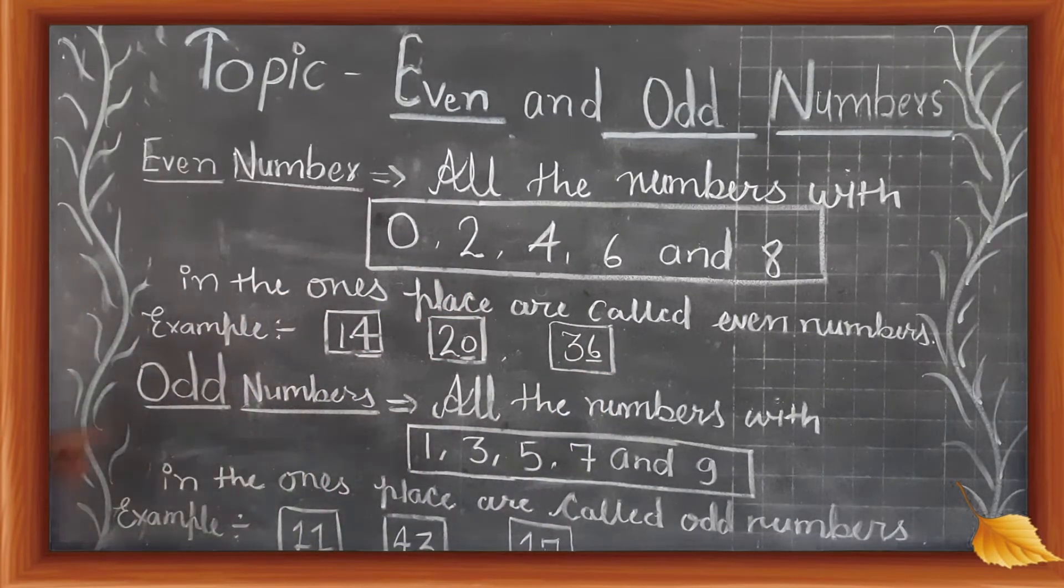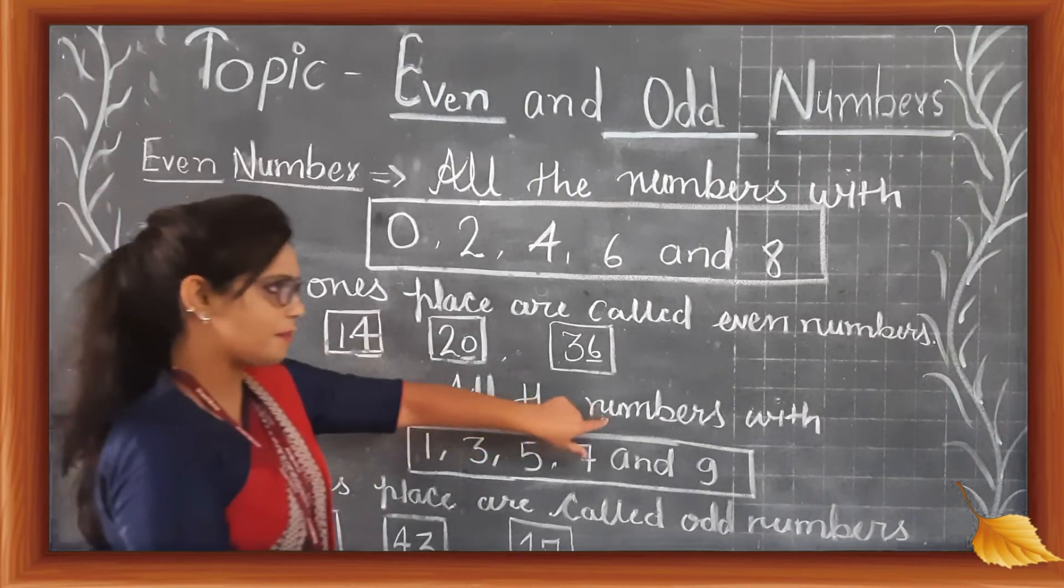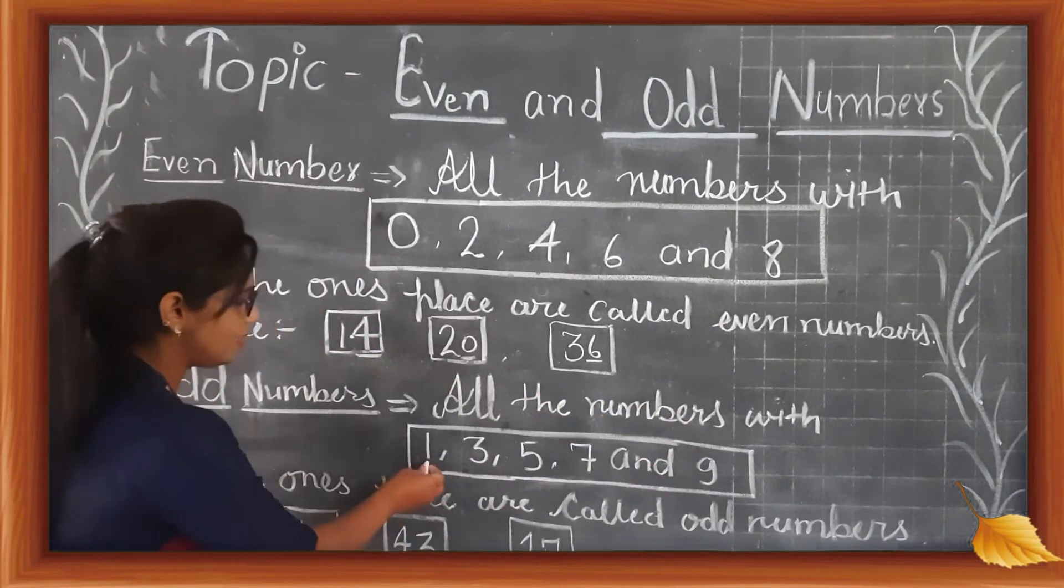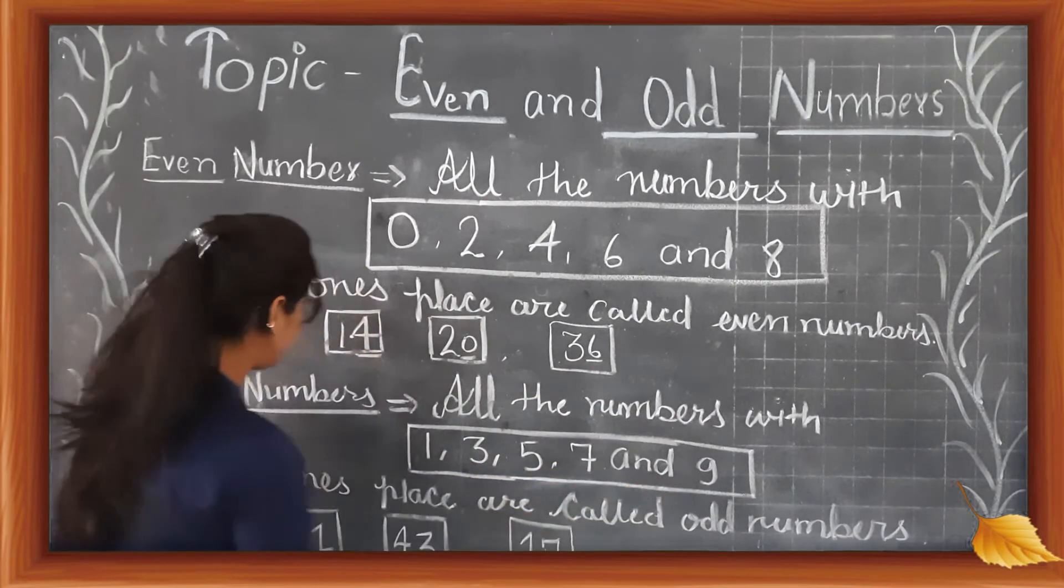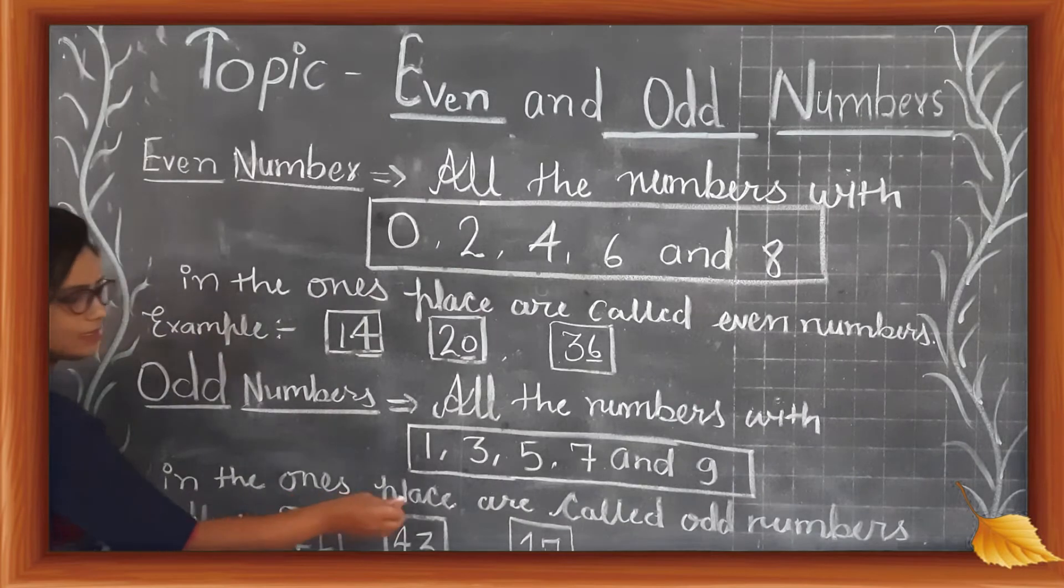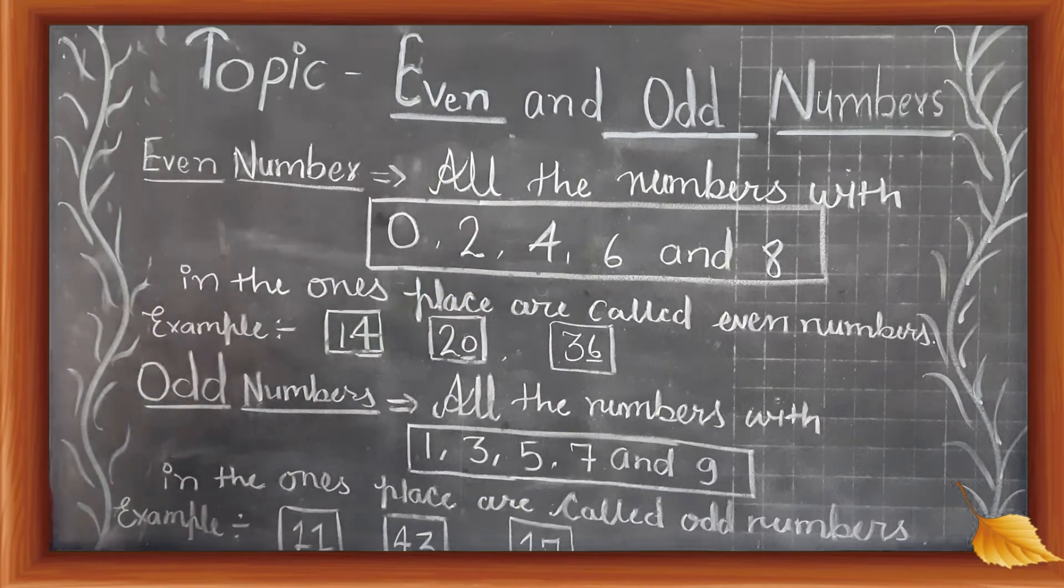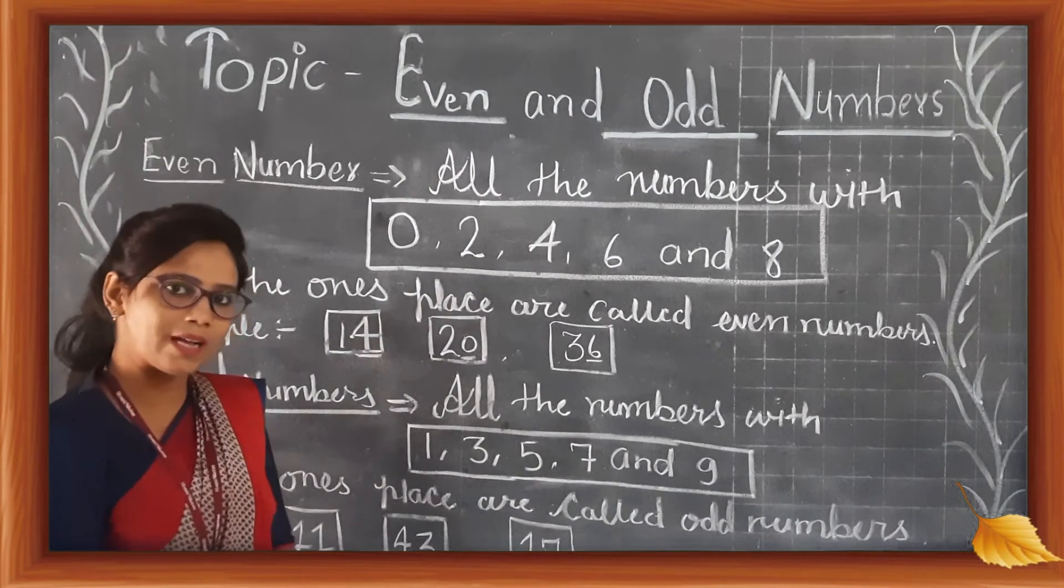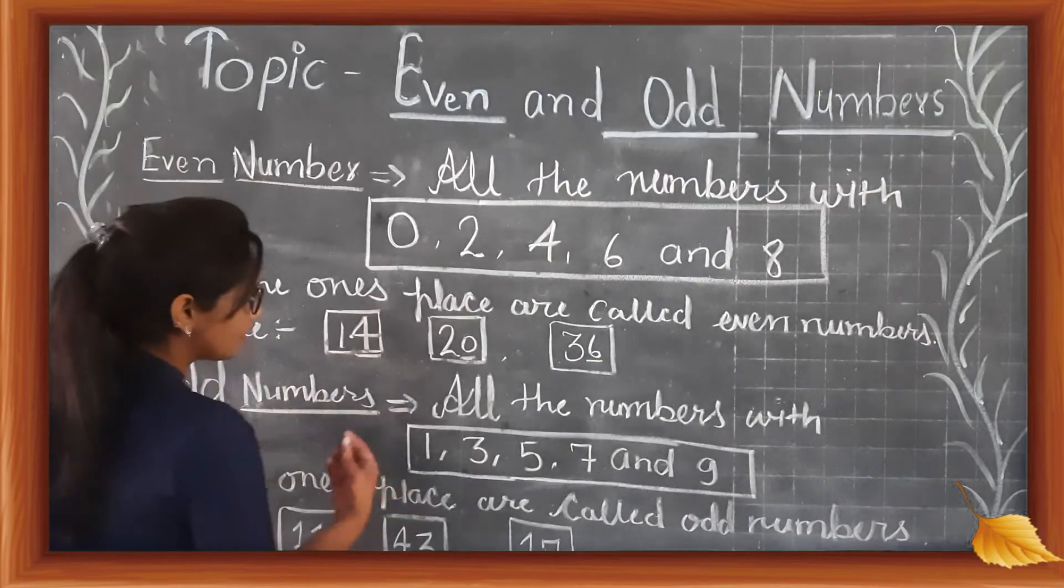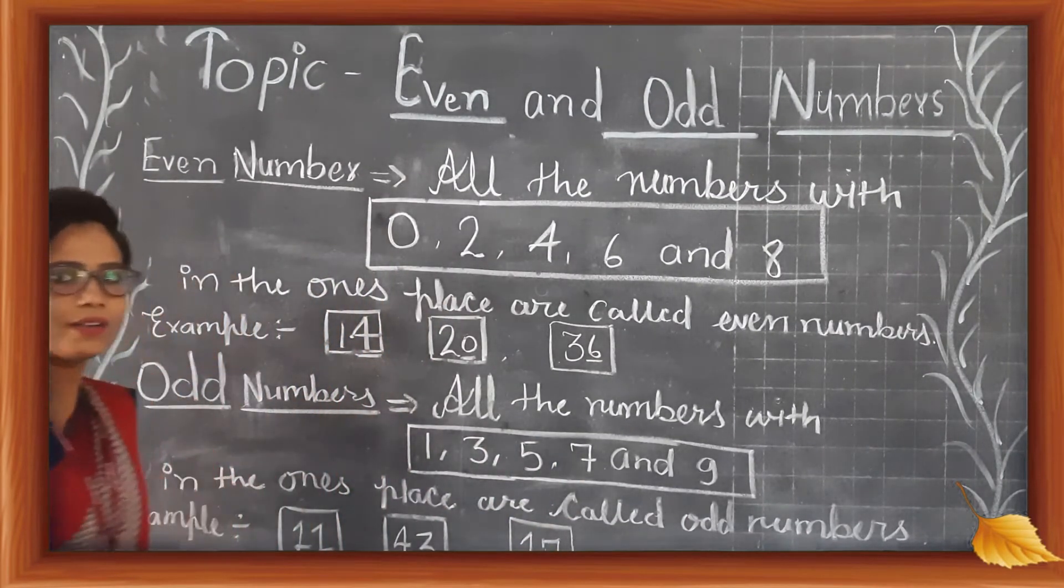Now odd numbers. What is an odd number? All the numbers with 1, 3, 5, 7, and 9 in the ones place are called odd numbers. We can say the numbers which are not divisible by 2 are called odd numbers.